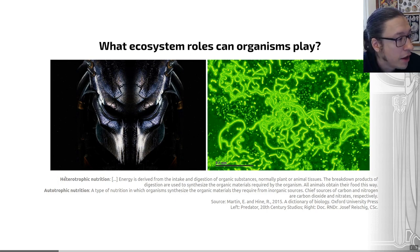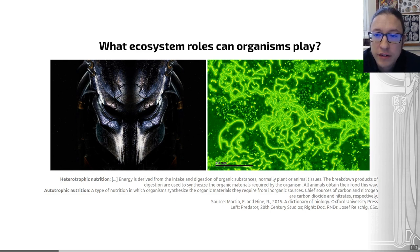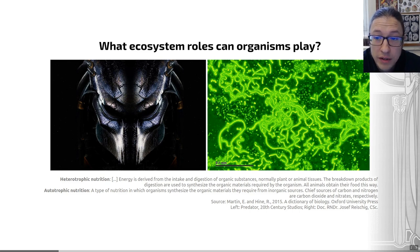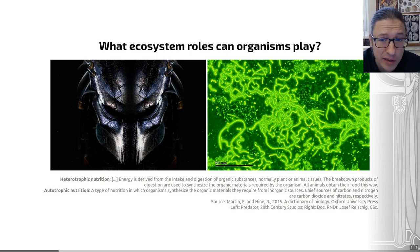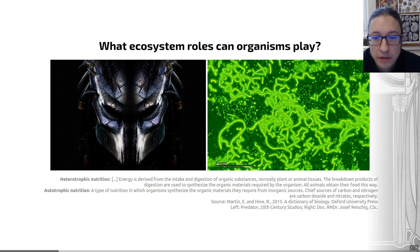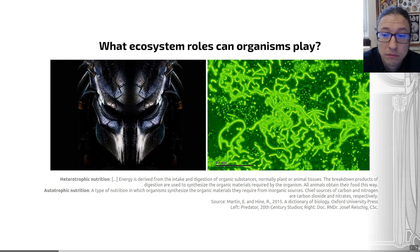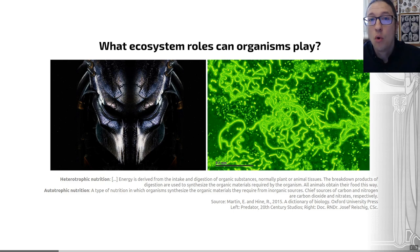Autotrophs are things that can create their own organic material to survive — think of all green plants. These are autotrophic because they use light as a source of energy for the synthesis of their organic materials, making them photo-autotrophic. They use light to synthesize all of their organic molecules, and that's true of the cyanobacteria on this slide as well. That's one expression of how we can define organisms based on their ecosystem role.